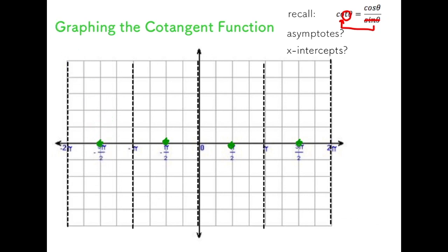Just like all the other functions, I'm going to consider the cotangent function by substituting in different values for theta in order to arrive at points on my graph. I'm going to strategically pick points based on special triangles — pi over four, pi over three, pi over six — because those are easy to compute. I can use special triangles, the unit circle, or whatever trig tools I see fit.